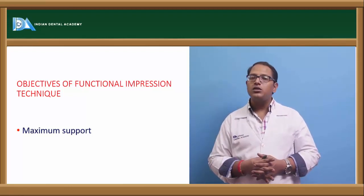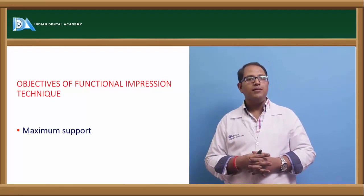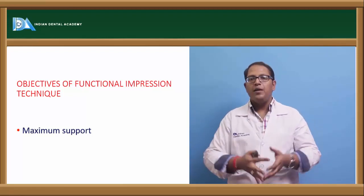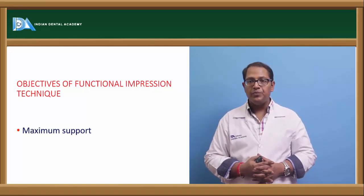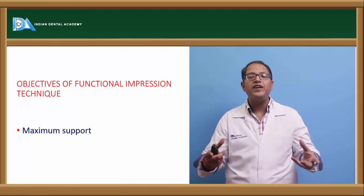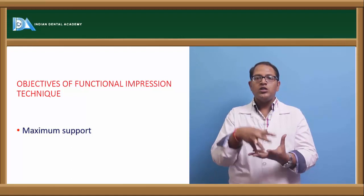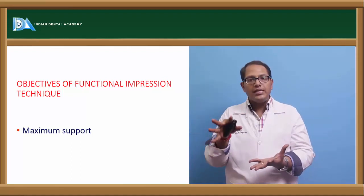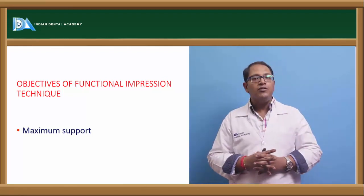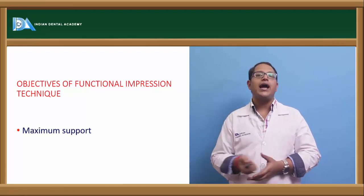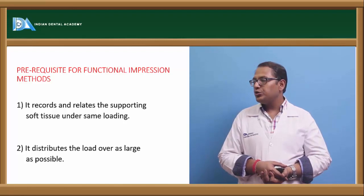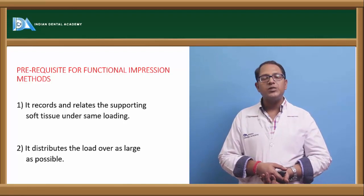What is the snowshoe effect? Snowshoe effect means broad stress distribution. When you walk in snow, the shoes you wear are bigger — twice or three times the size of your foot. The reason for this larger size is that it covers a bigger surface area. More surface area means more stability on the snow, so you will not slip. A similar concept is used in removable partial dentures: applying broad stress distribution with the snowshoe effect gives maximum support. The prerequisite for functional impression is that it records supporting soft tissue under the same loading and distributes the load over as large an area as possible.